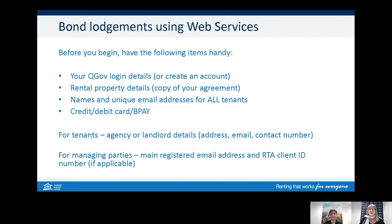When you're ready to use web services to lodge a bond, make sure you have created your QGov account. A lot of information to complete the RTA lodgement fields you'll find on your tenancy or rooming accommodation agreement, so have it handy. If there are multiple tenants, you will need separate email addresses — make sure these are accurate and correct, as providing false information to the RTA is not permitted. Have your credit or debit card ready to pay. For tenants, use the agency name, not the individual property manager's name. For agents, use the main email address registered with the RTA.